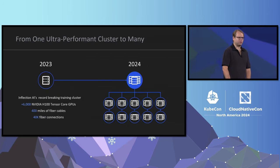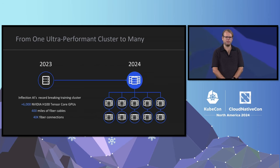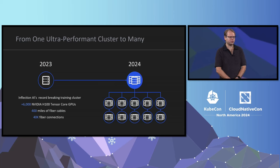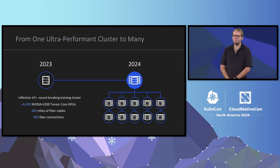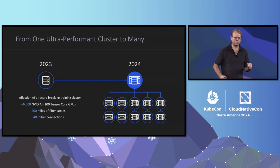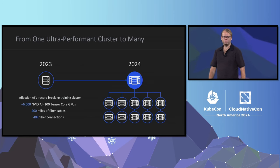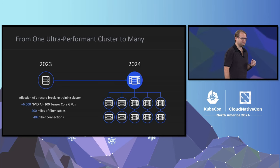Why is all this automation and tooling so important? Last year at KubeCon and GTC, we spoke about how we broke the MLPerf world record using the very first H100 production cluster brought to market. We replicated this success many times over, scaling from what was then 6,000 GPU clusters to clusters over 10,000 GPUs — in some cases even over 30,000 and more GPUs. This would not have been possible, especially in this timeline, without relentless focus on automation.